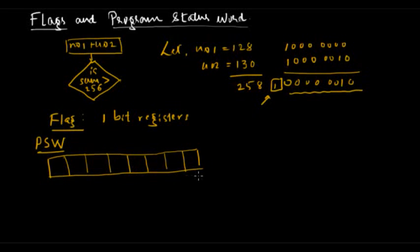The PSW has bits 0 to 7, making 8 bits in total. In bit 7 we have the carry flag, which we have just learned about. In bit 6 we have the auxiliary carry flag.